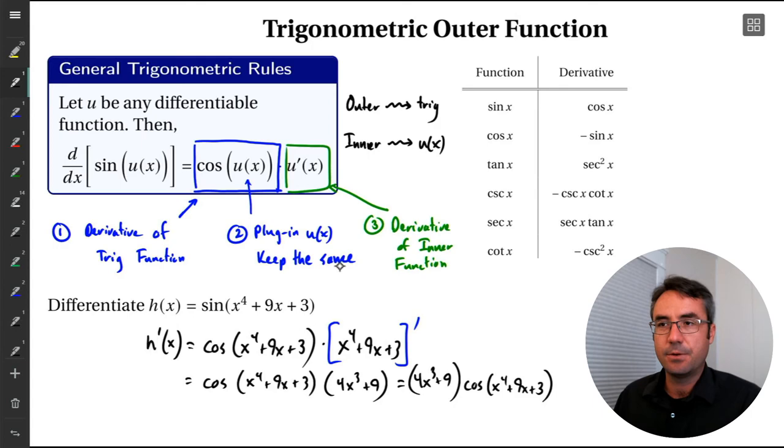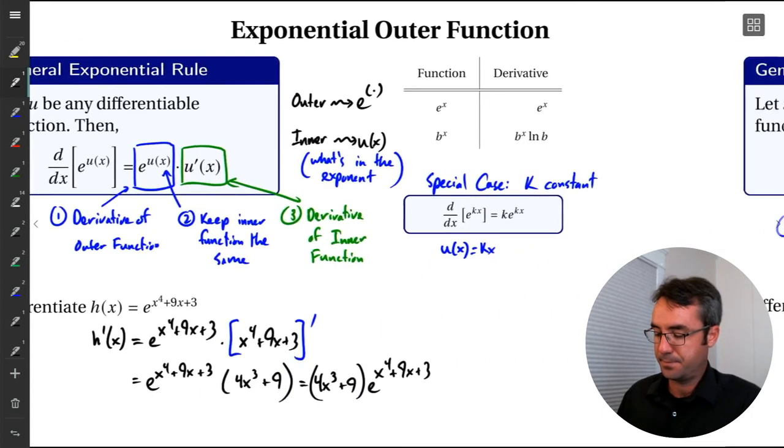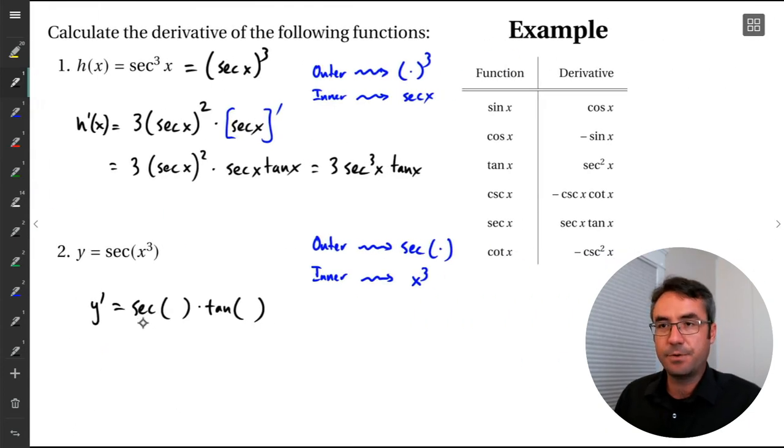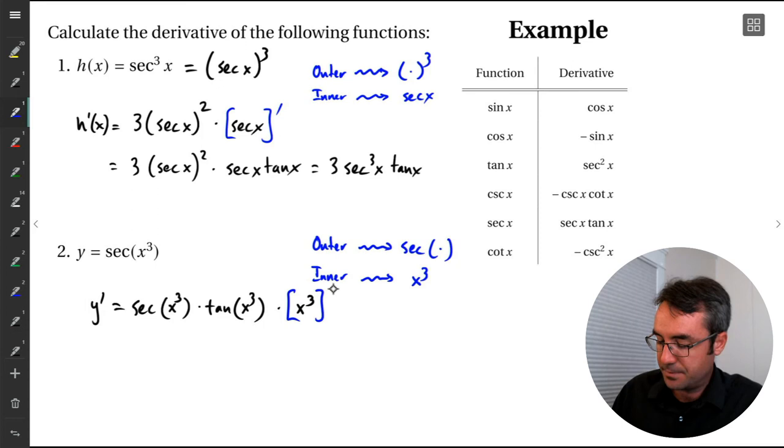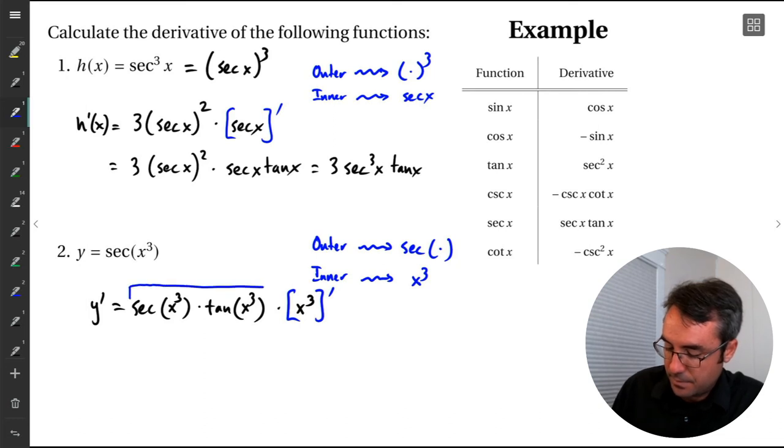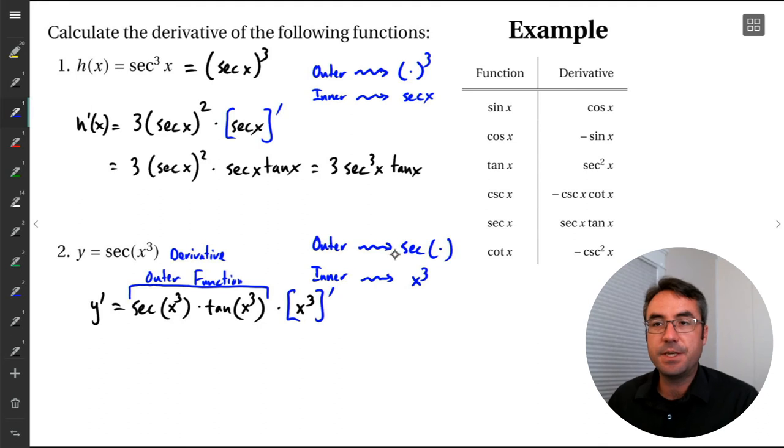So the thing we're looking at right now is we want to keep our inner function the same in this example. So we have the derivative of secant. It's secant times tan. But then we want to keep this inner function the same. So it's going to be x cubed here and x cubed here. So that x cubed is inside now the derivative of secant. Now that's not the end of the story. We then take our inner function and multiply by its derivative. So we want to do the derivative of x cubed. So this might be just a kind of a tricky thing to identify here. This portion is the derivative of our outer function. So the derivative of secant is secant times tan. And then we plug in whatever inner function was there. We plug that in. So x cubed here.